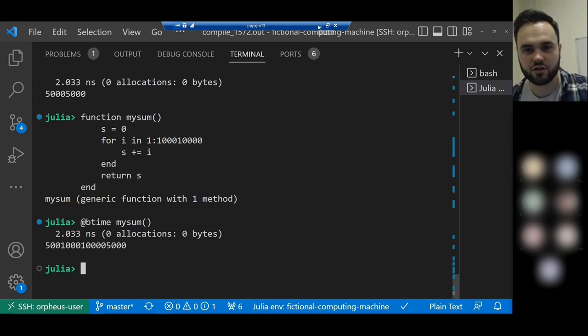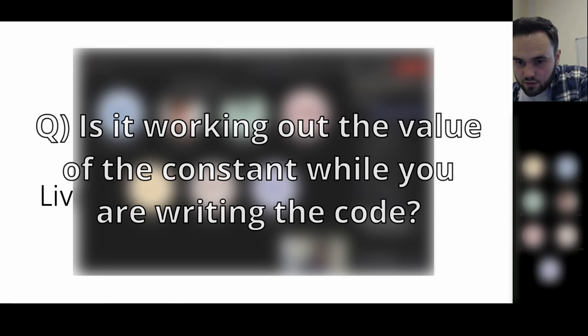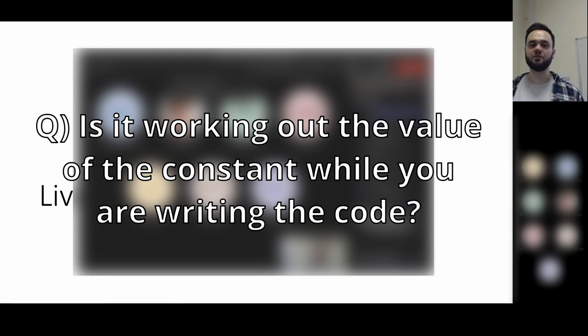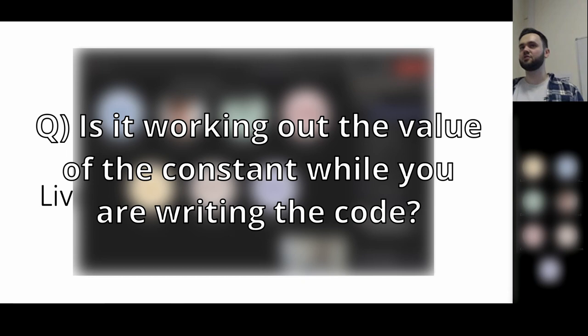Julia uses just-ahead-of-time compilation — the first time a function is called it runs the compilation process and caches the result. For the constant sum example, it won't actually run the for loop; it has heuristics and formulas to calculate what the value should be without running the loop.